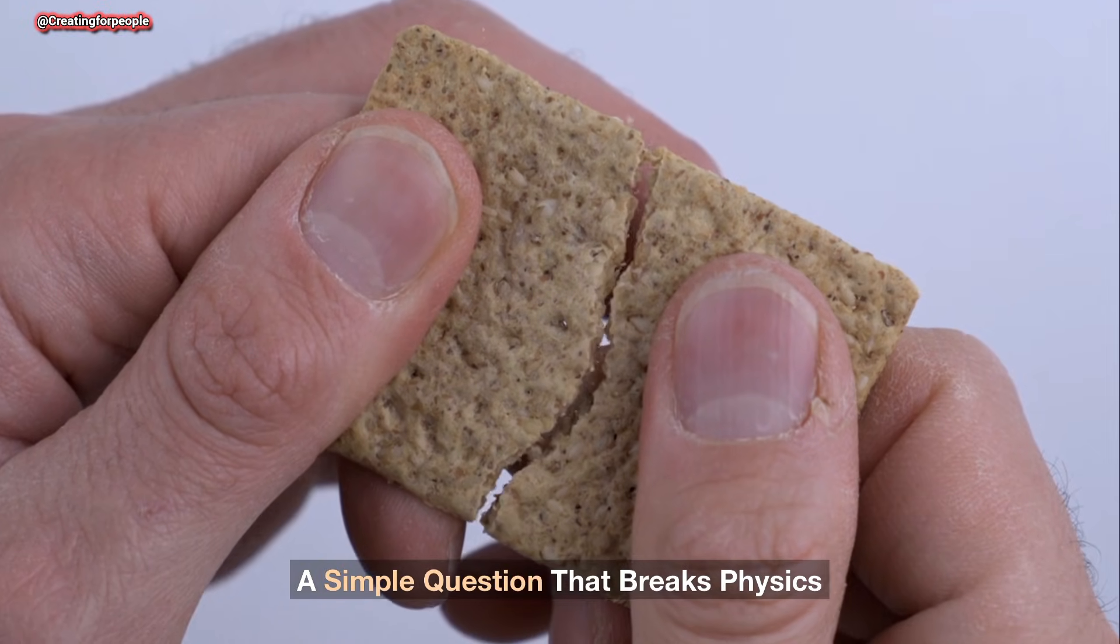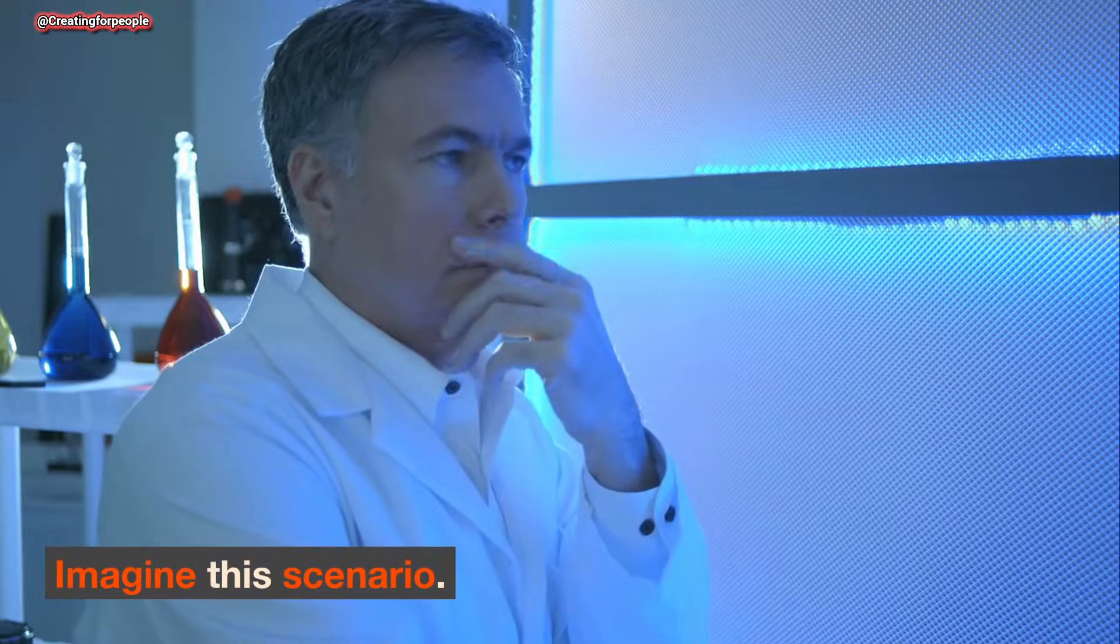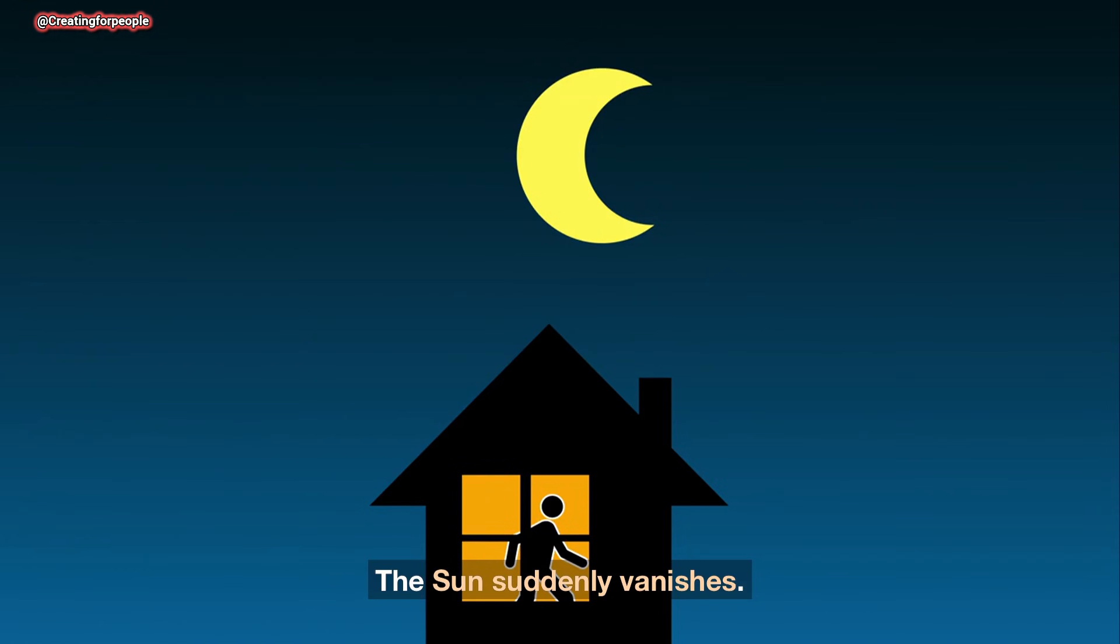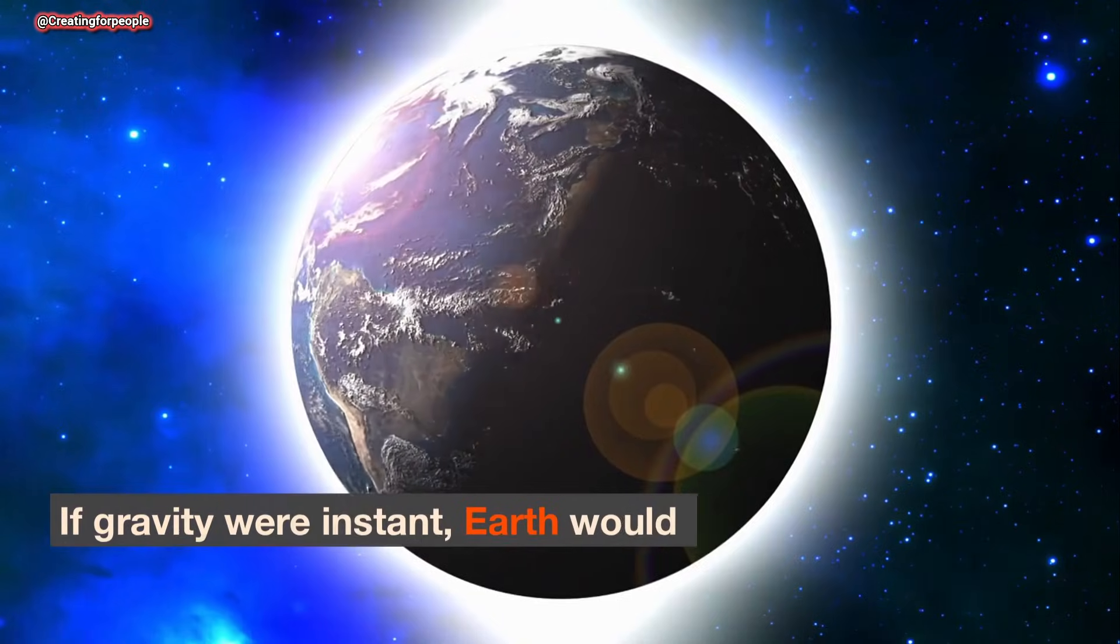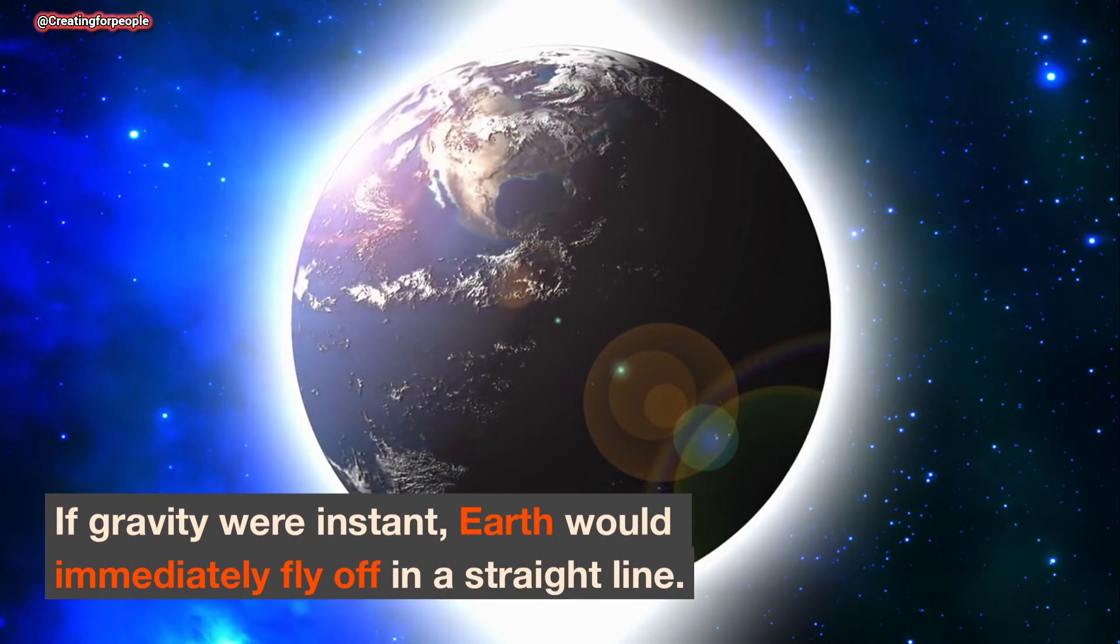A simple question that breaks physics. Imagine this scenario: the sun suddenly vanishes. What happens to Earth? If gravity were instant, Earth would immediately fly off in a straight line.